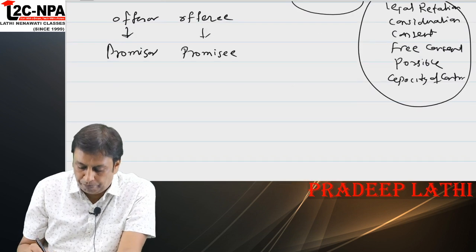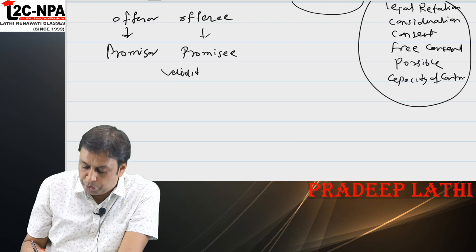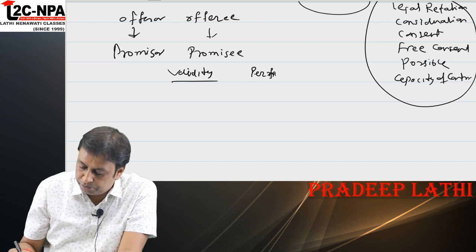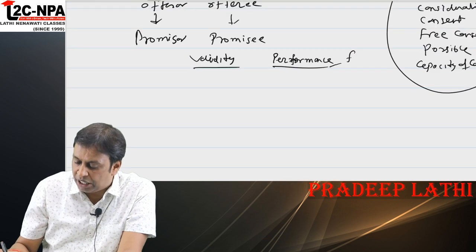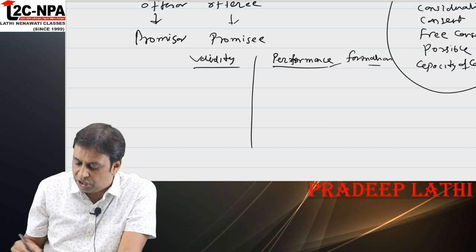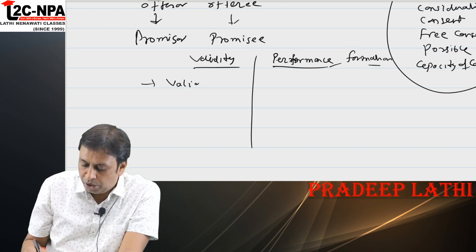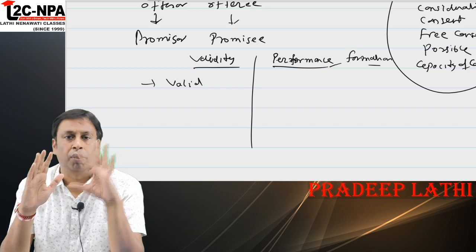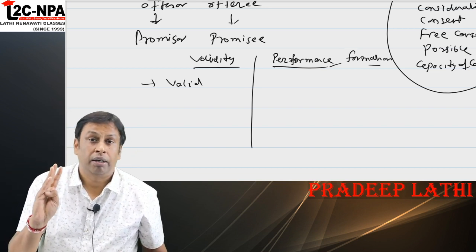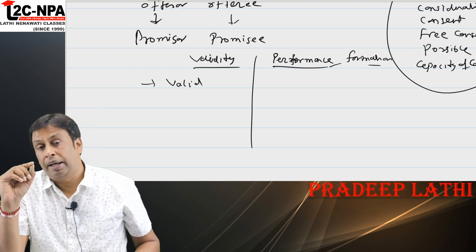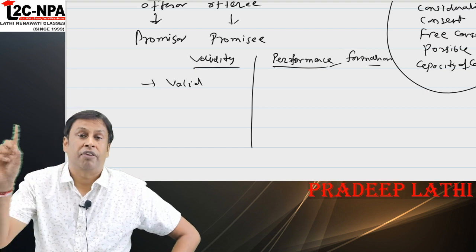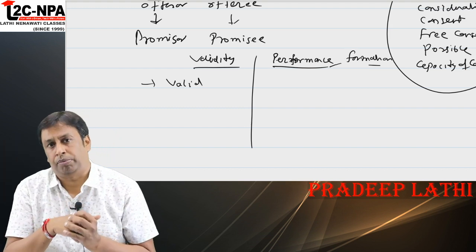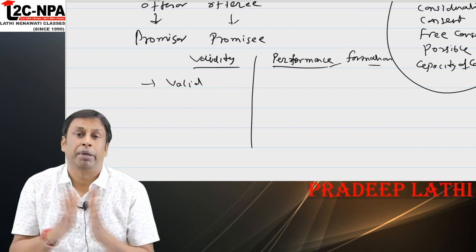Types of contract: there are three bases for classification — validity basis, performance basis, and formation basis. On the validity basis there are six classifications. First is valid contract — an agreement which is enforceable by law is called a valid contract. All factors of enforceability exist and both parties are legally bound to perform it.